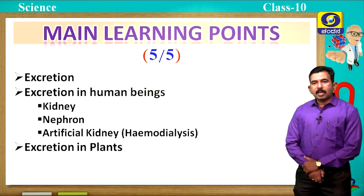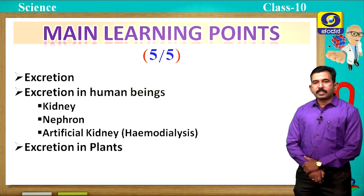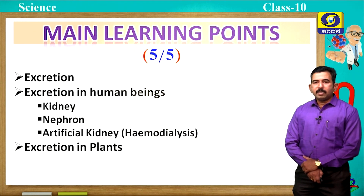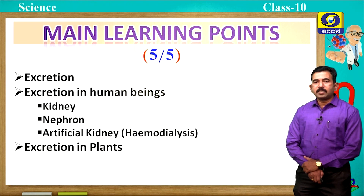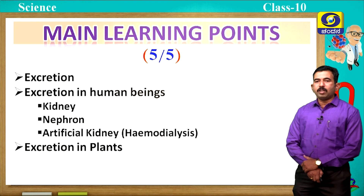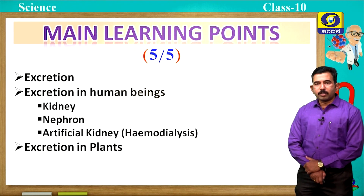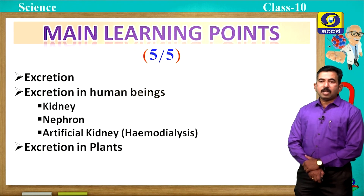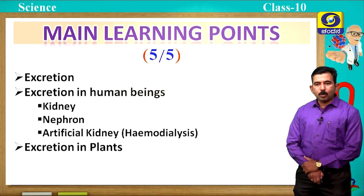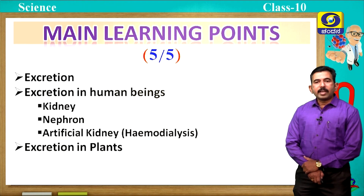In the last part we are going to study excretion: excretion in human beings — in this we are going to study the detailed structure of kidney, nephron, stages of urine formation — we are also going to discuss artificial kidney, nothing but hemodialysis, and also excretion in plants.